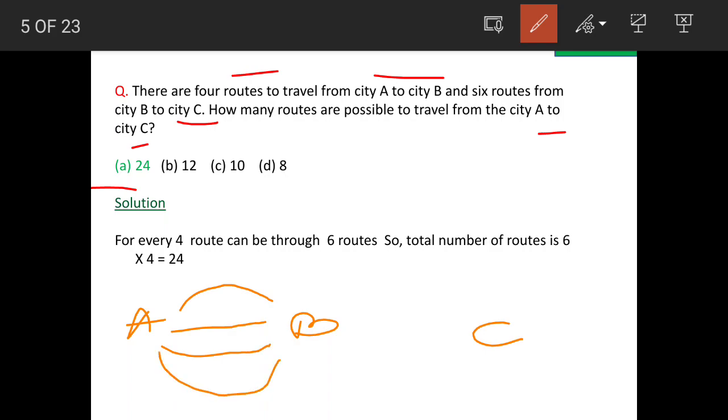So, these are the 4 routes and from B to C, 6 routes are there: 1, 2, 3, 4, 5 and let us say 6th is here.